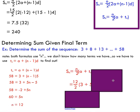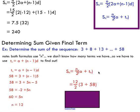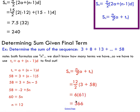Now that we know n, I'm going to pick on the formula that uses tn because I've got the final term, and you can see I've substituted my new n value of 12. I've got my a value, my tn value, and I can just calculate the sum of the first 12 terms in that way.